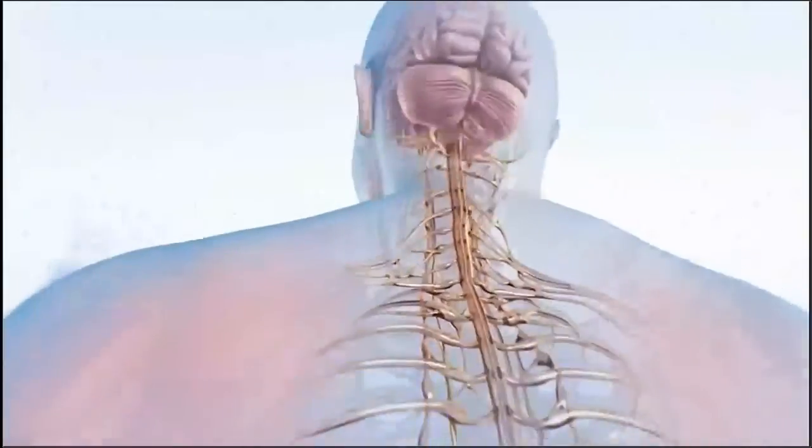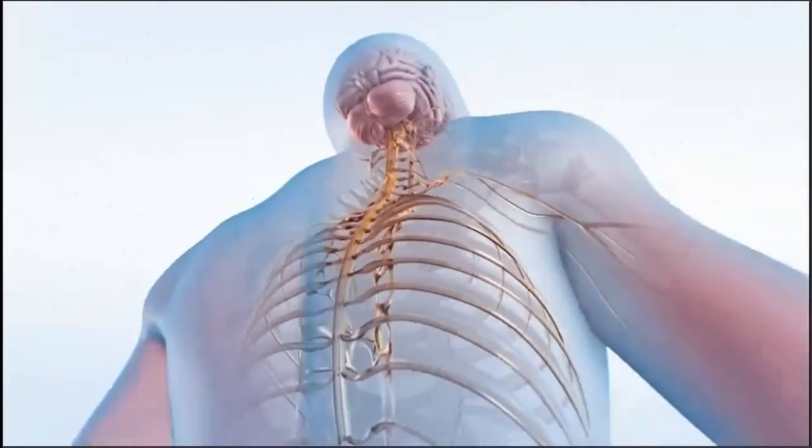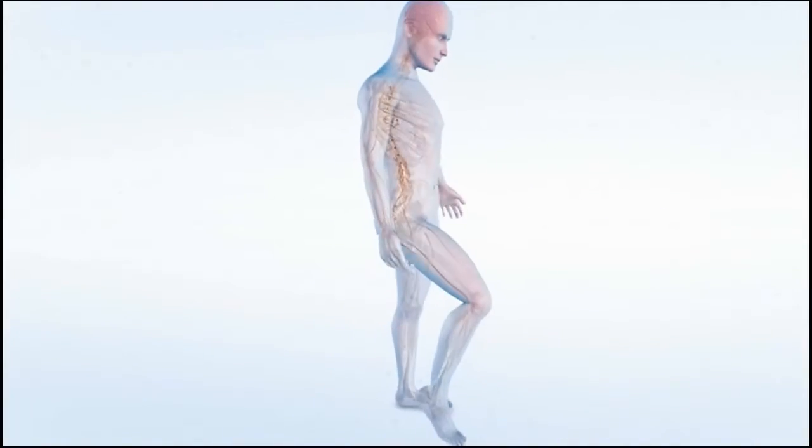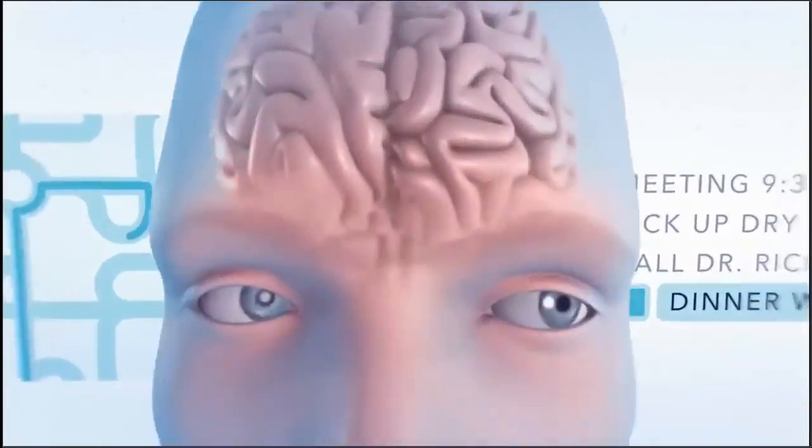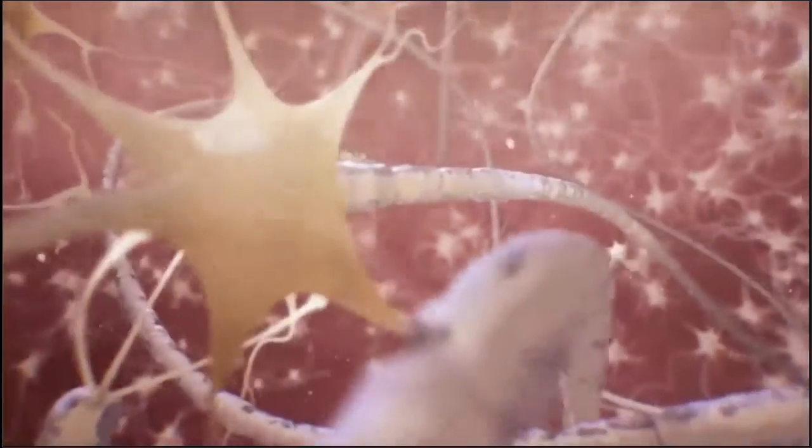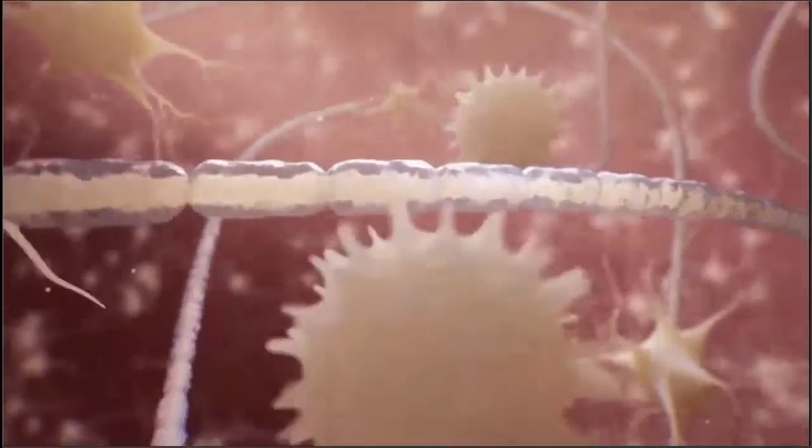Multiple sclerosis is a disease that impacts the brain and spinal cord, which make up the central nervous system that controls everything we do, whether it's taking a physical step or solving a complex problem. The exact cause of MS is unknown, but we do know that something triggers the immune system to attack the brain and spinal cord.